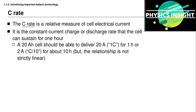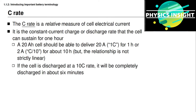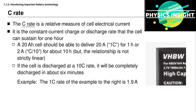To compute the C-rate from nominal capacity, simply write out the capacity with its units — for example, 20 Ah — then erase the H, leaving 20 A, or 20 amperes. So ampere-hours becomes amperes, and milliampere-hours becomes milliamperes. If we start with a fully charged battery cell and discharge at a 10C rate, the cell will be completely discharged in about 6 minutes. For the example cell with a nominal capacity of 1.9 ampere-hours, the 1C rate is 1.9 amperes, or equivalently 1,900 milliamperes.